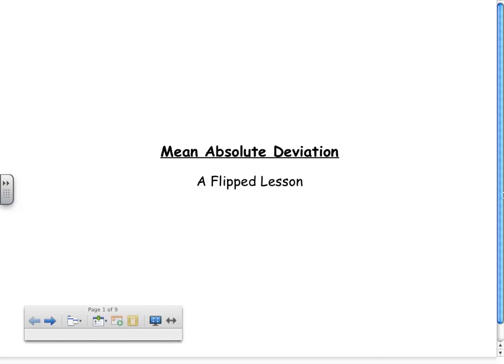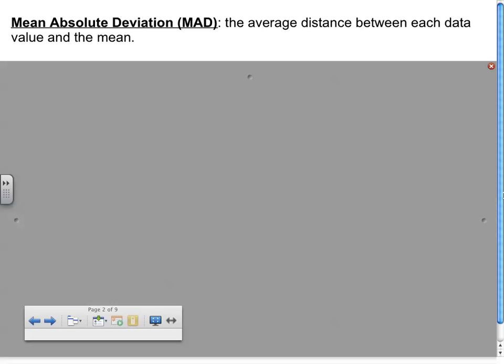Before I teach you how to calculate the mean absolute deviation of a data set, let's first define what it means. The mean absolute deviation, or the MAD as we will call it, is the average distance between each data value and the mean.